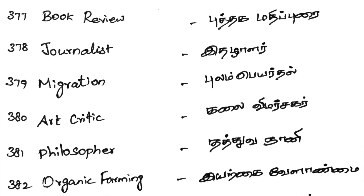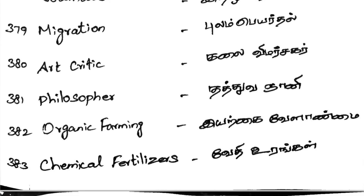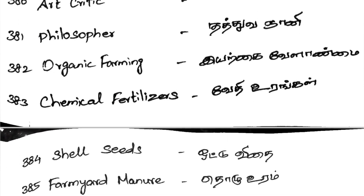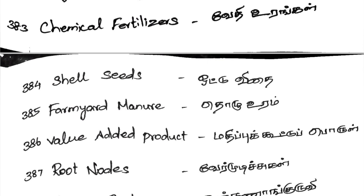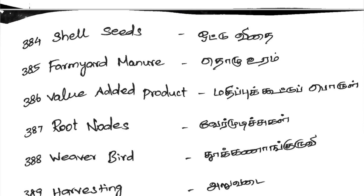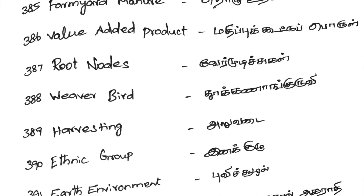Art Critic — Kalai Vimarchar. Philosopher — Tathwanyani. Organic Farming — Eyrkai Velenvai. Chemical Fertilizer — Vethi Urangal. Cell Seed — Ottu Vithai. Farm Yard Manure — Tholu Uram. Value-Added Product — Madhipur Kuuhtu Porul. Root Nodes — Veyer Muduchikal. Weaver Bird — Thuukkanang Gurivi. Harvesting — Aruvadai.